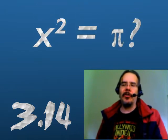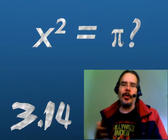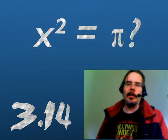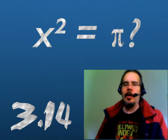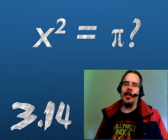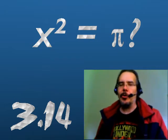Pi is also transcendent, which means it can't be expressed as a polynomial with integer coefficients, like the way the square root of 2 can be represented, like x squared equals 2.